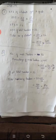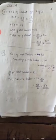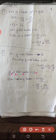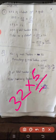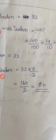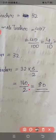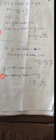So 2 by 5 of total number is 32. Total number is 32 multiplied by 5 by 2. That is 32 into 5 divided by 2, which is 160 by 2, that equals 80. So the total number of teachers is 80.